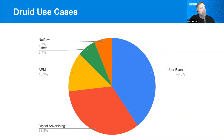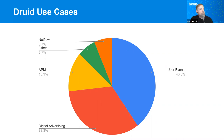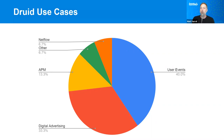I took a look recently at all the companies on the Apache Druid 'powered by' page and keyed in their use cases. Our origins are in digital advertising, and then there are user events — anything that's clickstream. Things that are organized by timestamp are well-suited for Druid use cases. APM — application performance monitoring — is a big one. Digital advertising requires a lot of real-time ingestion and very quick query processing.